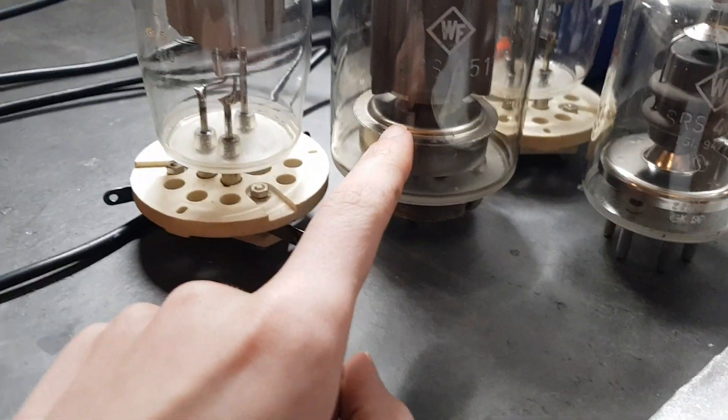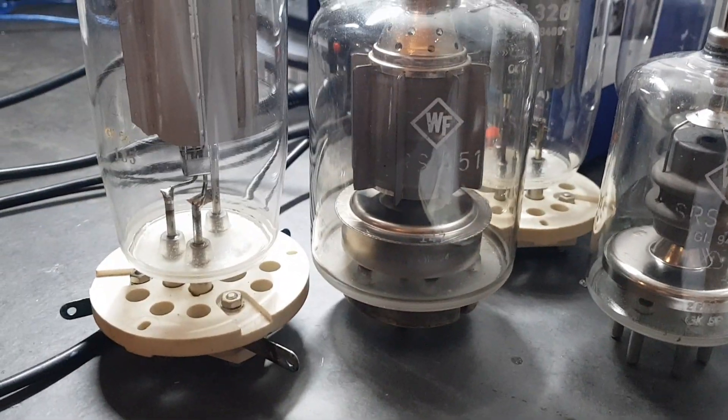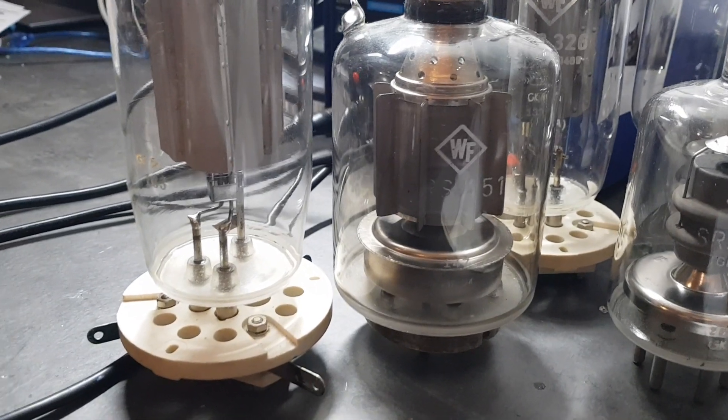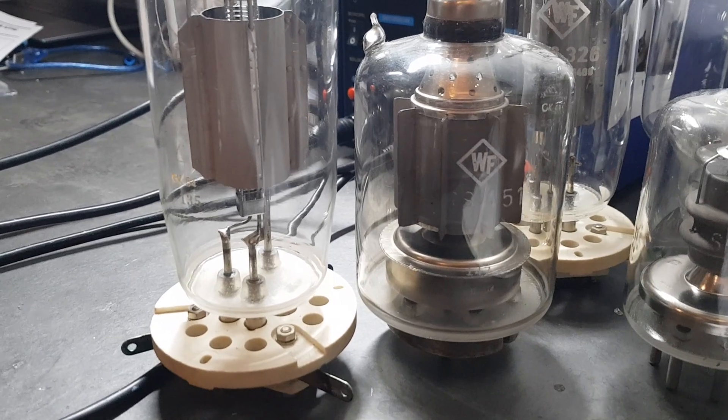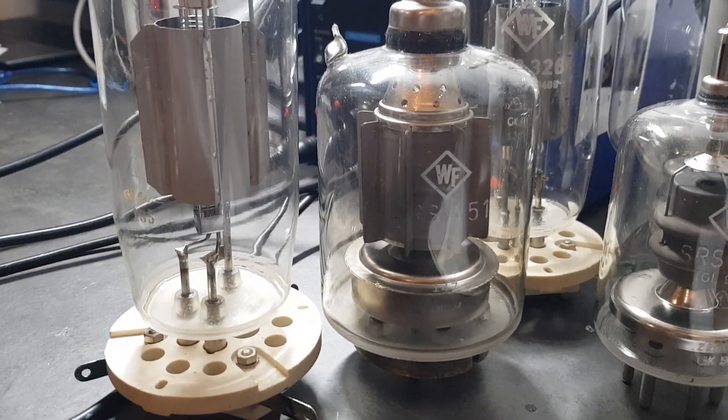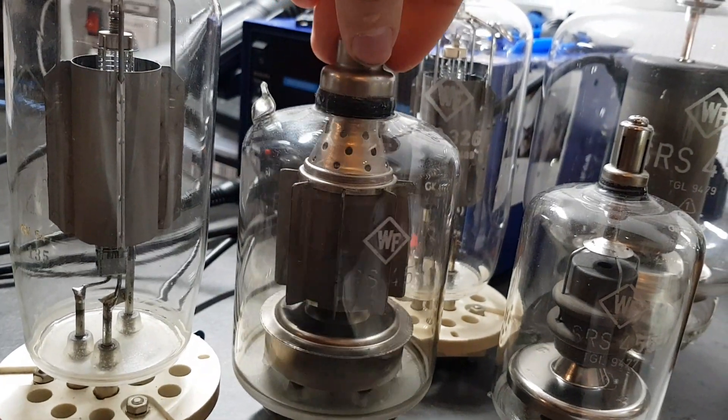Then we have this tube right here. It's the SRS 451. It's very rare. You can't really find that tube. It's quite a nice tube. It kind of looks like a pulse tube, but it isn't.